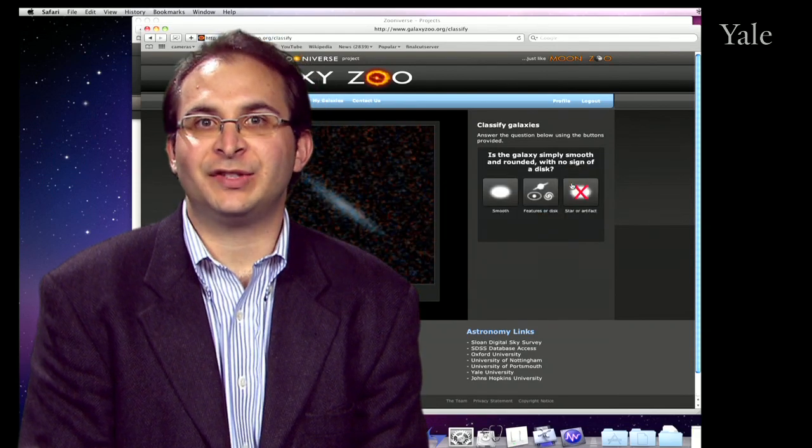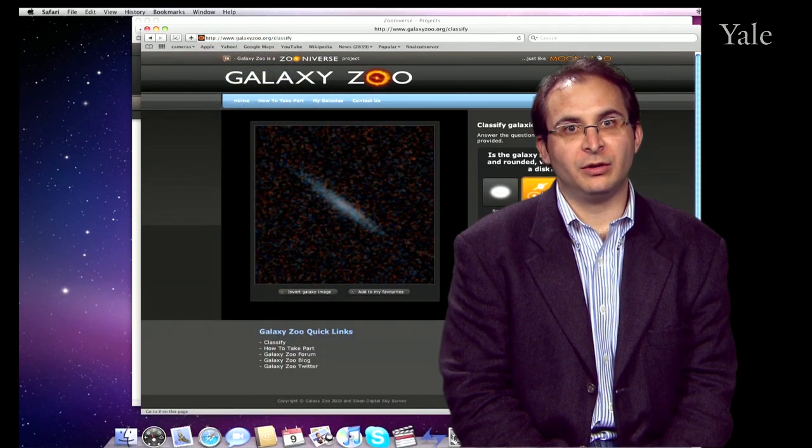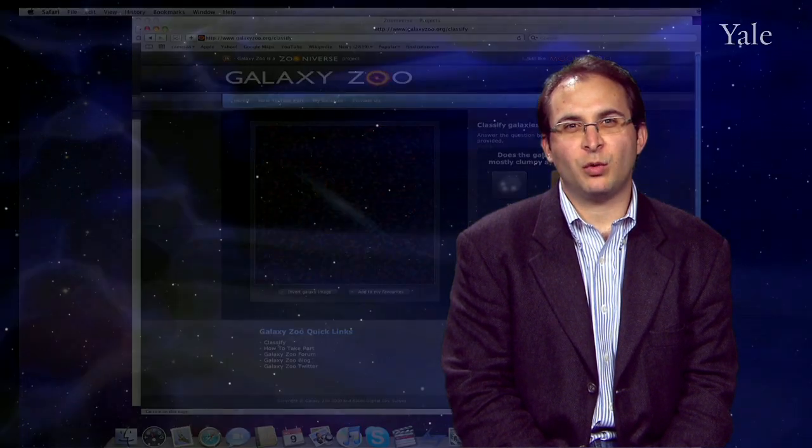What many scientists do now is they just run sophisticated computer programs. A computer can only ever look for what you basically teach it to look for. And so if something doesn't quite fit or the data is not very good, it can be very challenging for your automated routine to really determine what it is you're looking at. So the reason we turn to the internet is because we just need more people, we need more human brains.